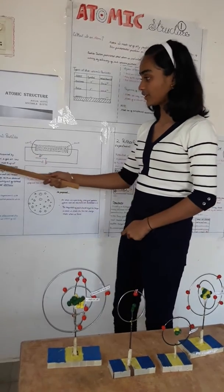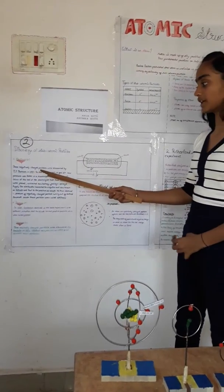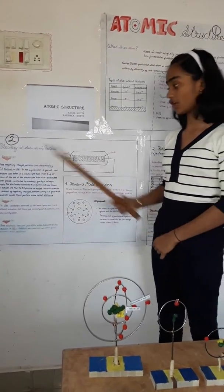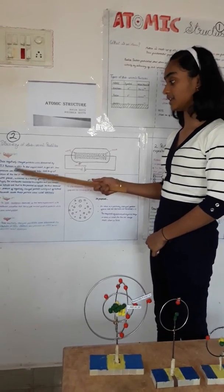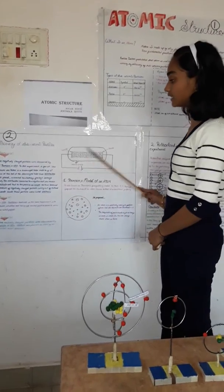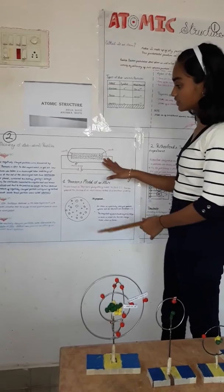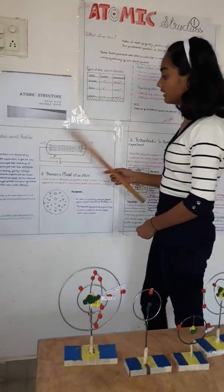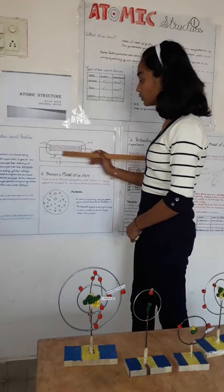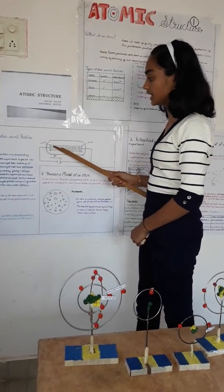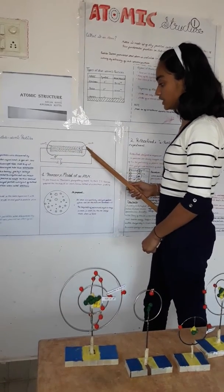Electron. Electrons are negatively charged particles discovered by J.J. Thomson in 1897. In this experiment, gas at low pressure was taken in a discharge tube made of glass and was connected by two electrodes. One was negatively charged and one was positively charged.